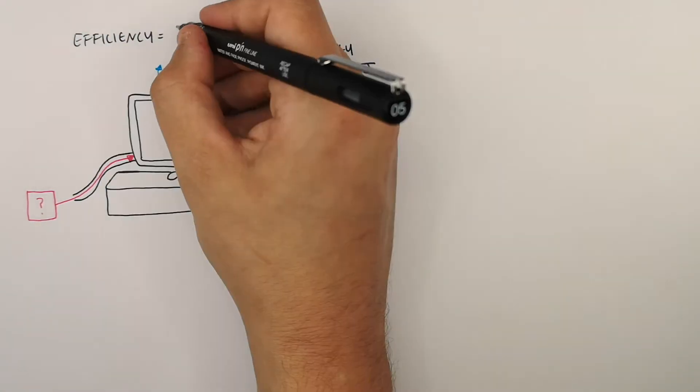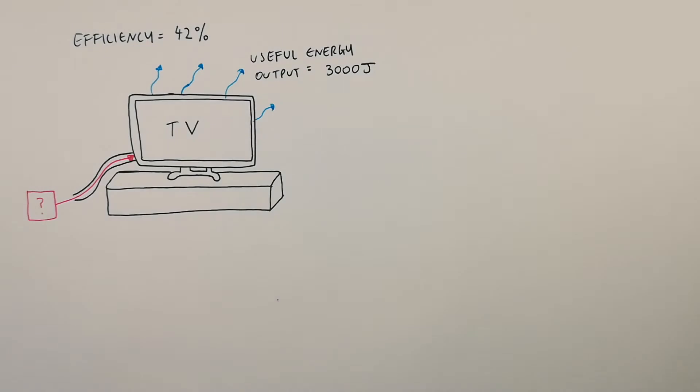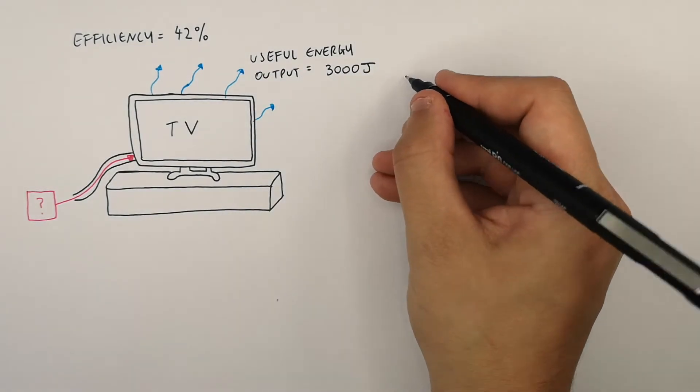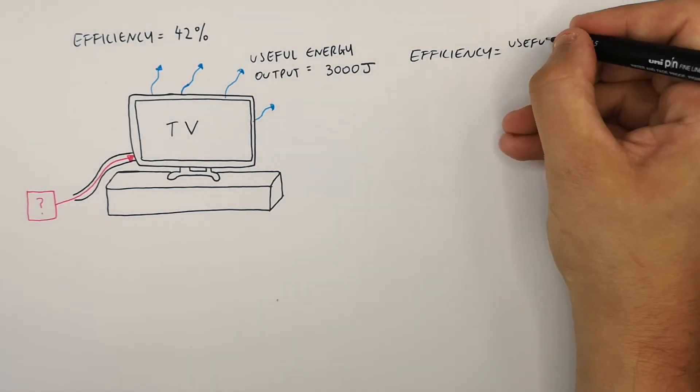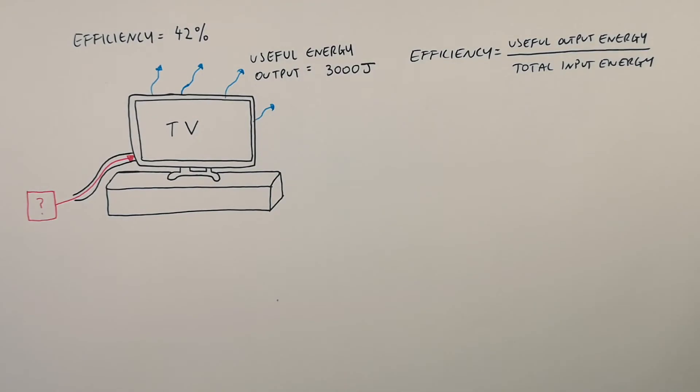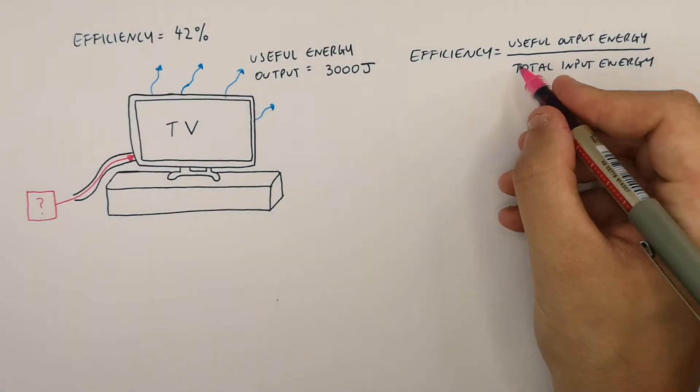This TV has an efficiency of 42%. So we're trying to calculate the total input energy. Recall the equation: efficiency equals useful output energy divided by total input energy.